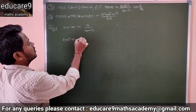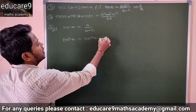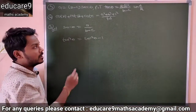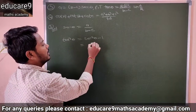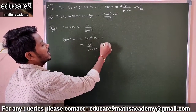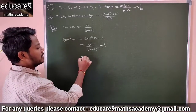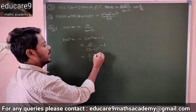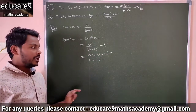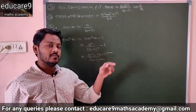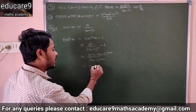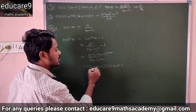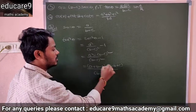Tan²θ equals sec²θ minus 1. What is sec θ? a/(b-c). Substituting: you get a²/(b-c)² minus 1. So the LCM is (b-c)². In the numerator: a² minus (b-c)². This can be written in the form a² minus b², so applying (a+b)(a-b): this is (a+b-c)(a-b+c), divided by (b-c)².